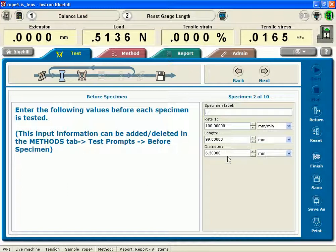This is a circular rope of about a quarter inch diameter, 6.3 millimeters, 99 millimeters long.